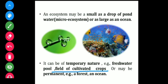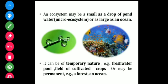Permanent ecosystems exist for a long period of time. Forests and oceans can be considered self-supportive ecosystems — they are able to support themselves without human maintenance. Basically, they are long-lived. So the ecosystem may be small or large, and also temporary or permanent.